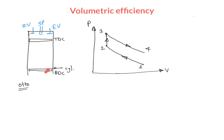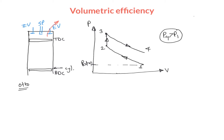When the piston moves back to BDC, pressure p4 at the end of expansion is more than the inlet pressure p1. p1 is atmospheric pressure. Because inside pressure is greater than outside atmospheric pressure, if we open the exhaust valve, exhaust gases flow outside. When the piston is at BDC, approximately 90 percent of exhaust gases flow out due to this pressure difference, carrying heat with them. Therefore 4 to 1 is constant volume heat rejection.